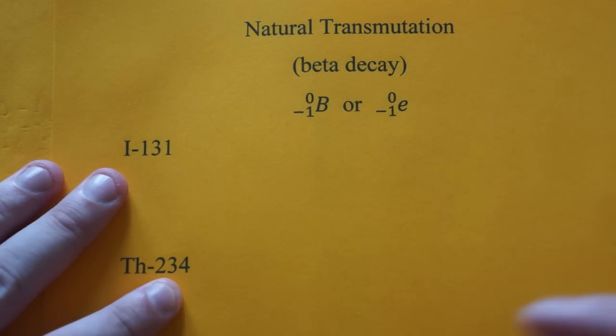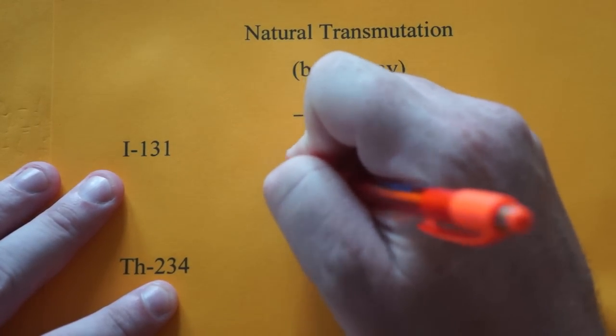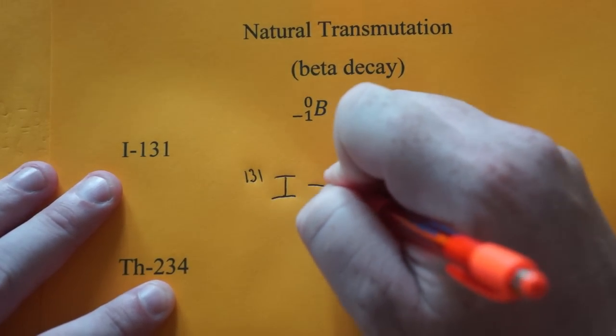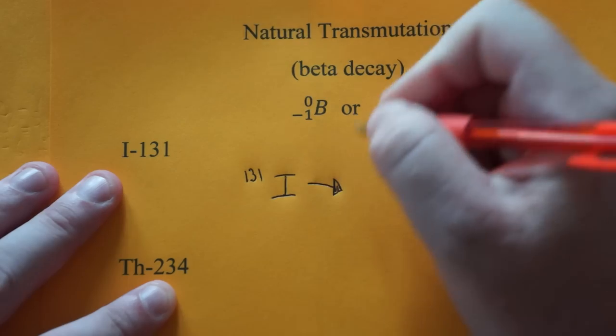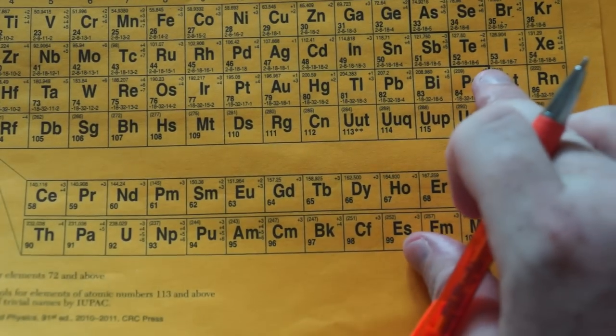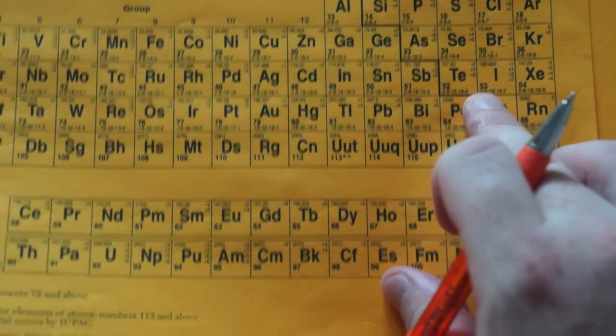So let's write our decay expressions. We have iodine 131. I'm going to draw an arrow. We have to find the atomic number of iodine, so we look at the periodic table. It's 53.